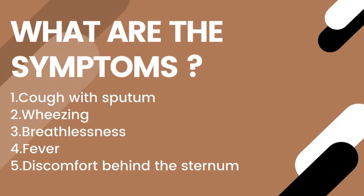Now let's look at some of the symptoms. They are caused mainly because of the discharge or secretions from the lining of the mucous membrane and also because of narrowing of the air passages of the lungs. The most common symptom is an irritating cough that produces little or no sputum initially but may later bring up grayish or yellowish sputum called phlegm.